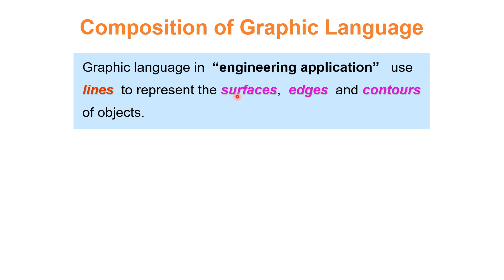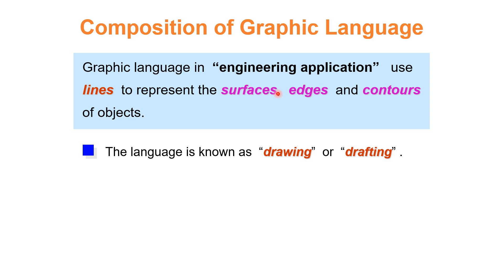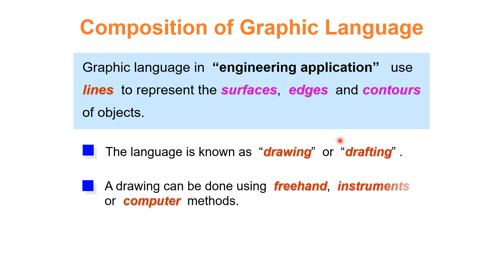Since word language has limitations and cannot properly describe dimensions, size, and shape features, we must use graphic language. In engineering applications, graphic language uses lines to represent the surfaces, edges, and contours of objects. This language is known as drawing or drafting. A drawing can be done freehand with a pencil, using instruments like set square and T-square, or by computer methods.